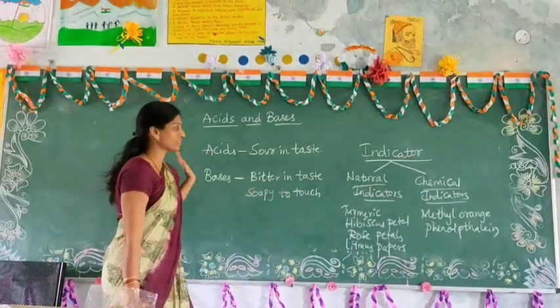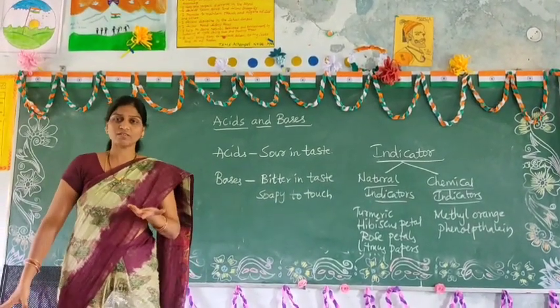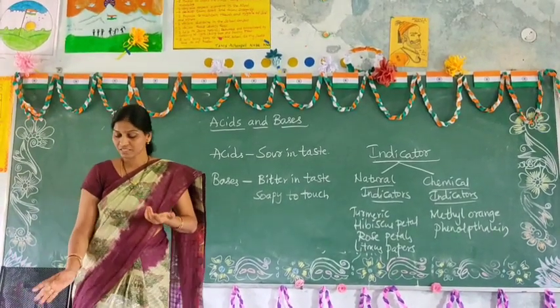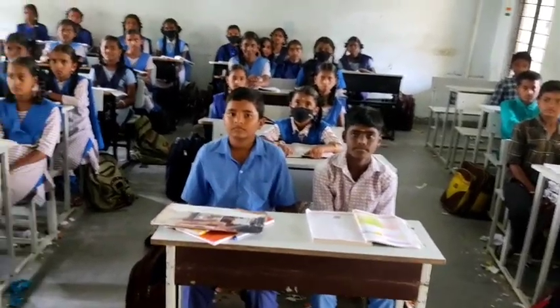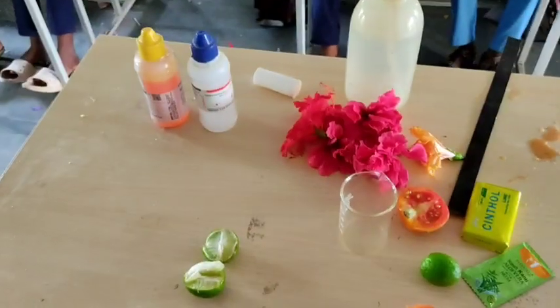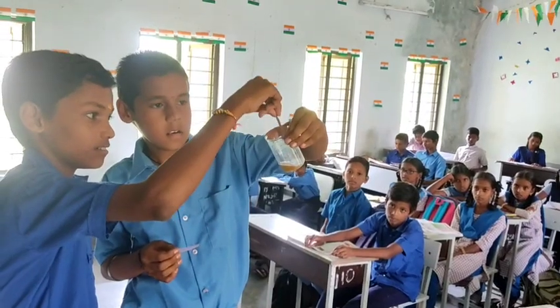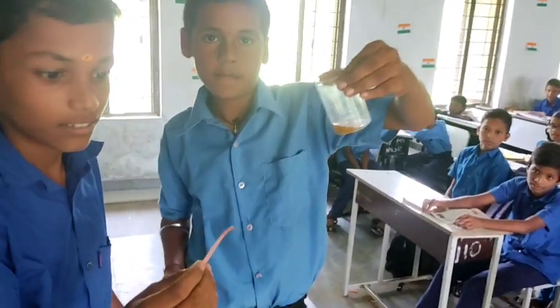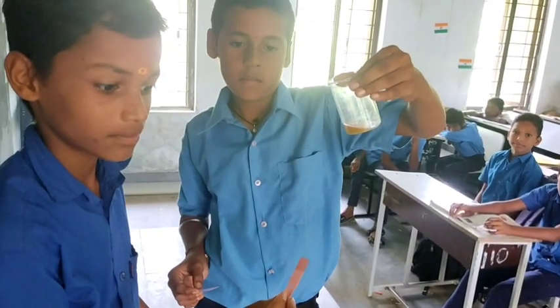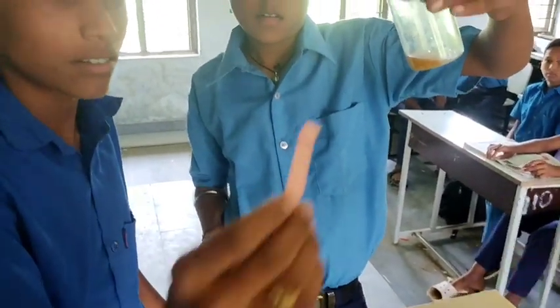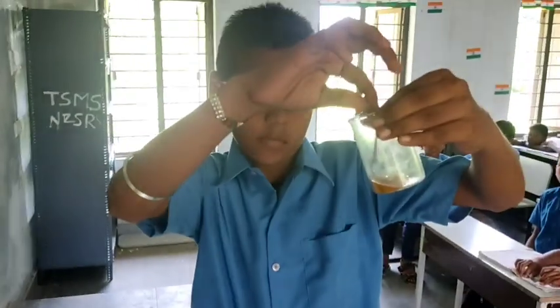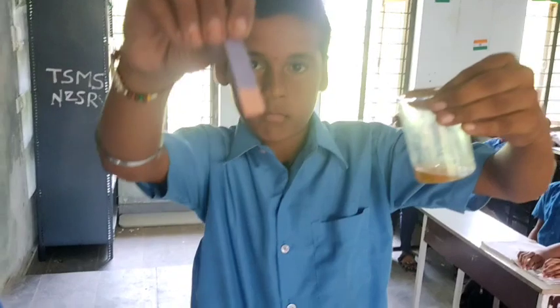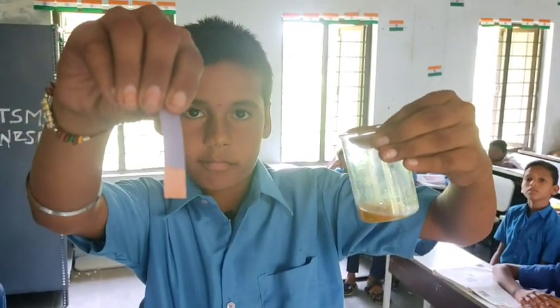We have already studied all these things. Now we are going to perform certain activities to find out whether the given substance is an Acid or a Base. We are testing Tomato Juice. First, we dipped the Red Litmus Paper into the Tomato Juice — it remains red in color. Next, we dip the Blue Litmus Paper and observe the color change — the Blue Litmus Paper has changed to red in color.